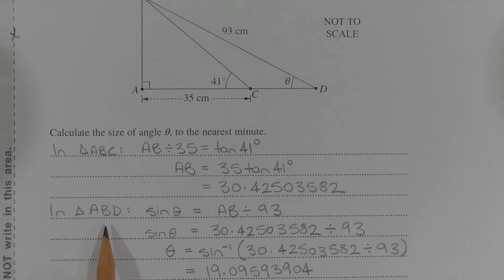Now in triangle ABD, sin theta equals opposite over hypotenuse. The opposite side in this case is side AB, and we've worked out the length of side AB in the previous step. So sin theta equals AB divided by the hypotenuse of 93, sin theta equals 30.42503582 divided by 93.